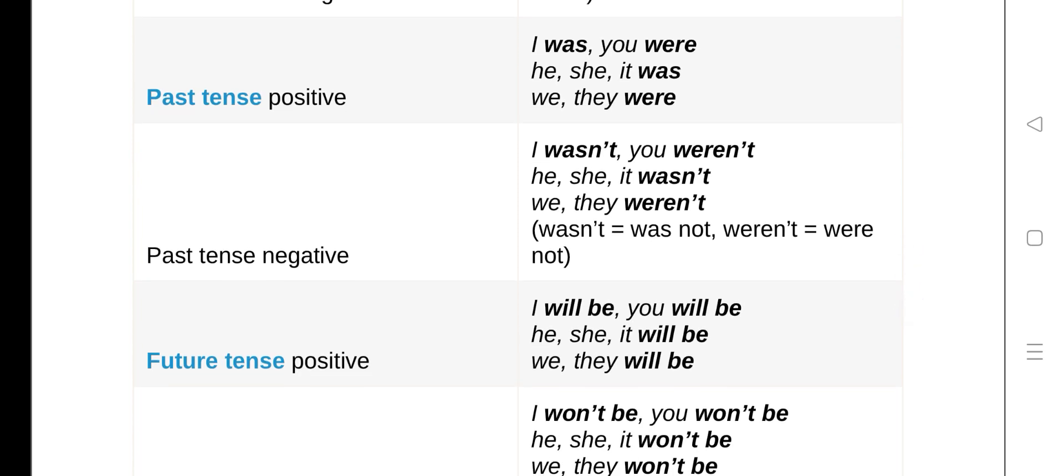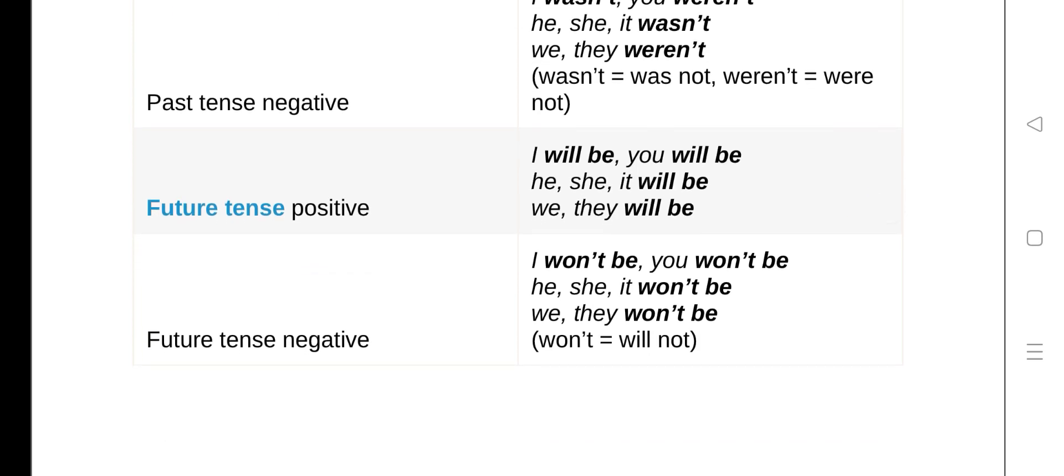Past tense positive: I was, you were, he/she/it was, we/they were. Let's see the negative of past: I wasn't, you weren't, he/she/it wasn't, we/they weren't. Okay, let's see the future tense.